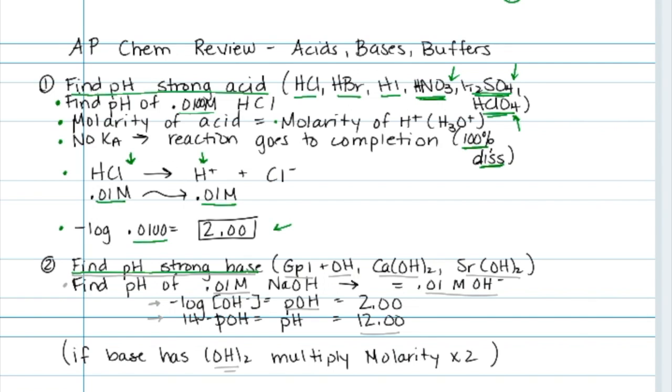If we want to find the pH of a strong base, our strong bases are anything group 1 plus hydroxide, or calcium or strontium hydroxide. To find the pH of this base, we assume that the concentration of the base equals the concentration of hydroxide. Again, this is ionic, so it dissociates completely. We take the negative log of the hydroxide ion to get the pOH, and then subtract the pOH from 14 to get the pH of 12. Remember though, if the base has two hydroxides, like calcium hydroxide or strontium hydroxide, you multiply the molarity by 2.